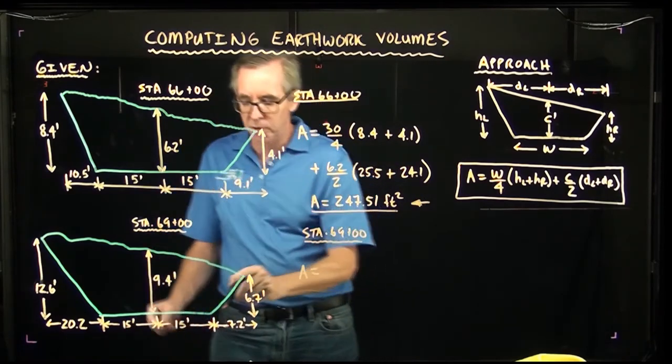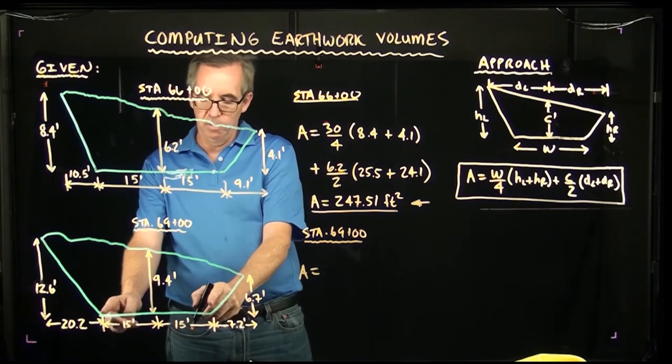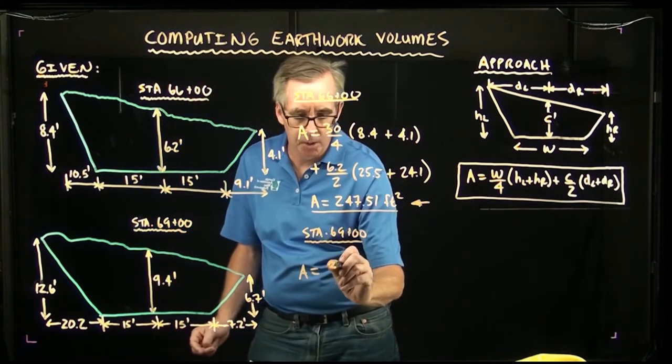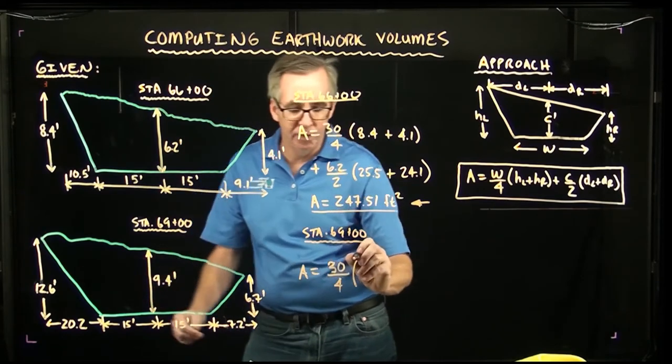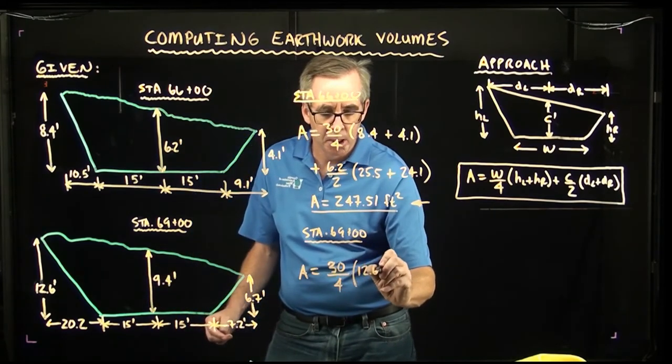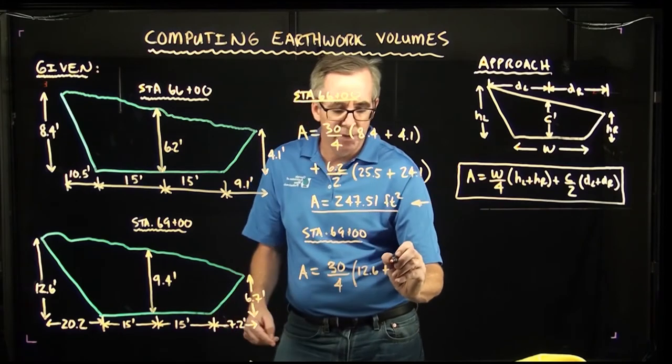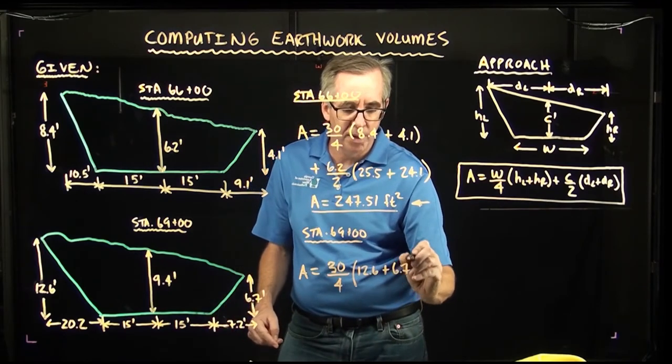So 69+00 we have the same formula. Area is equal to, the width term right here is also 30, which makes sense if it's the same roadway. We have the height on the left of 12.6, and the height on the right is 6.7, which all these dimensions by the way are in feet.